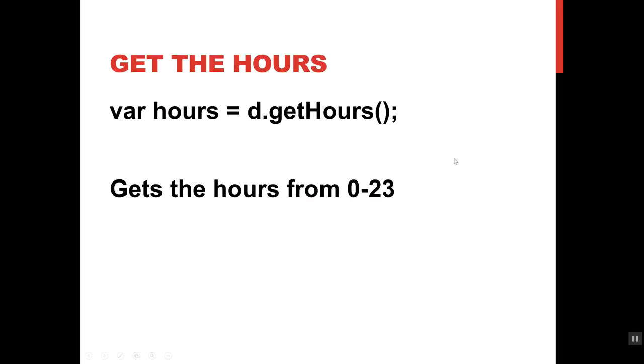You can get the component pieces of the time with these additional methods. d.getHours() will give you the hours from zero for midnight through 23. It's basically like military time where it keeps increasing after 12 to 13 for 1 PM, 14 for 2 PM, etc.